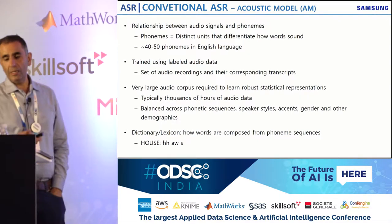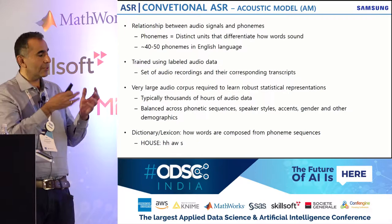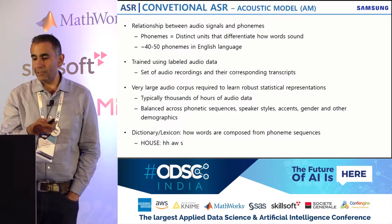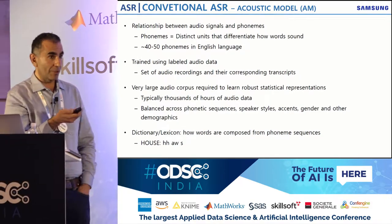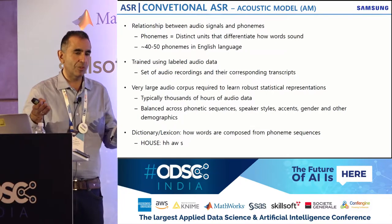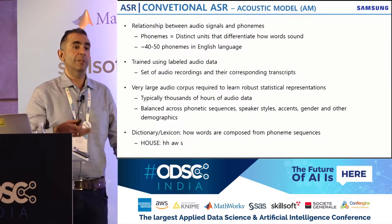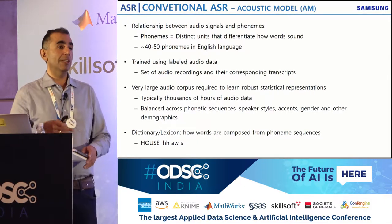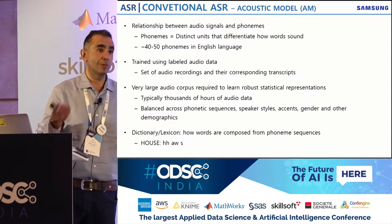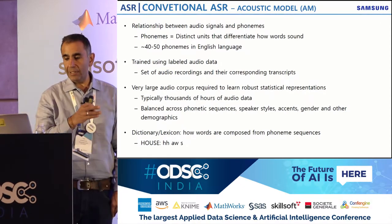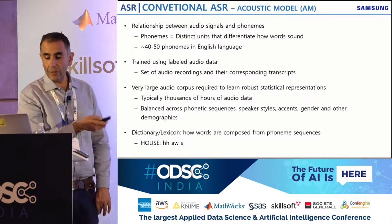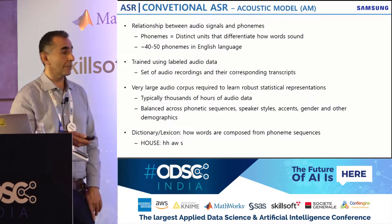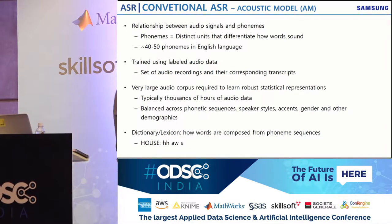An acoustic model converts acoustics to phonemes — in English there are about 50 phonemes. It's trained using labeled audio data, requiring thousands of hours balanced across different phonetic sequences, speaker styles, accents, and genders. Labeling is a very expensive job, and we are exploring whether unsupervised learning can automate it.